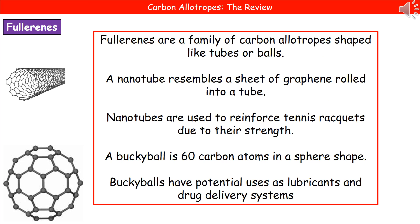The last allotropes of carbon we're going to look at are the fullerenes. Fullerenes are the family of carbon allotropes that are shaped like tubes or balls. If it's in the shape of a tube, then we refer to it as a nanotube, which is pretty much like having a sheet of graphene rolled up to make the tube, as shown on the left. We use these nanotubes to reinforce sports equipment like tennis rackets because they're incredibly strong.